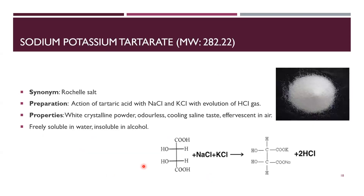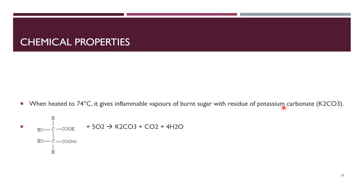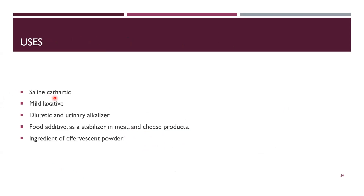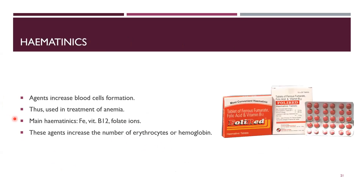The second emetic compound is sodium potassium tartrate, also known as Rochelle salt. It is prepared by the action of tartaric acid with NaCl and KCl. It is a white crystalline powder, odorless, saline in taste, and effervescent in air. When sodium potassium tartrate reacts with oxygen, what you get is K2CO3 (potassium carbonate), carbon dioxide, and water. Its uses include saline cathartic, mild oxidative diuretic, and urinary alkalizer.